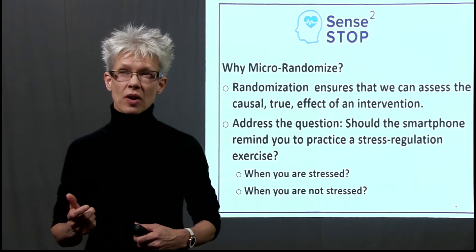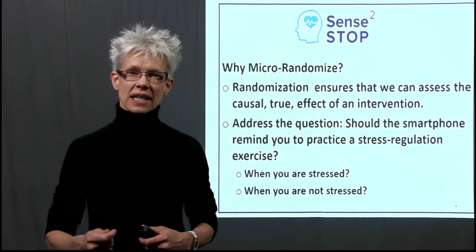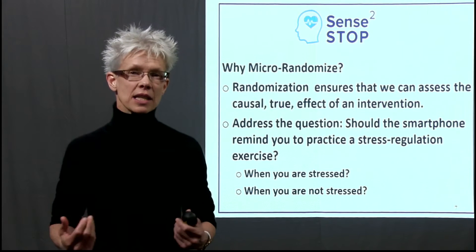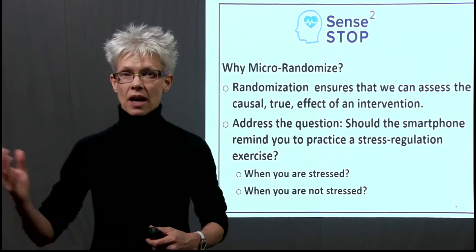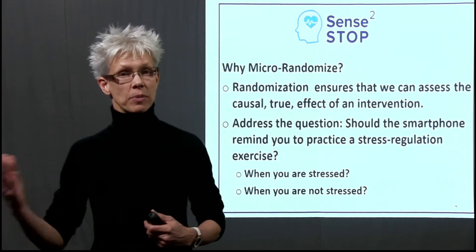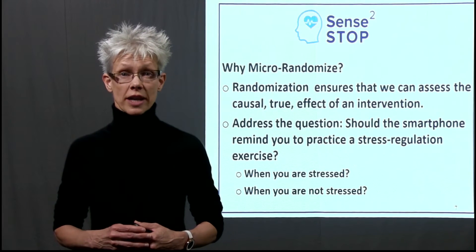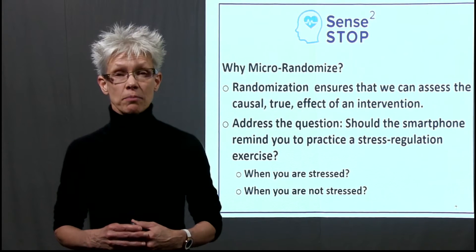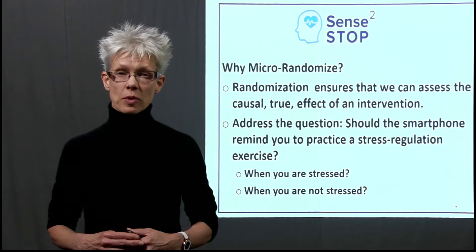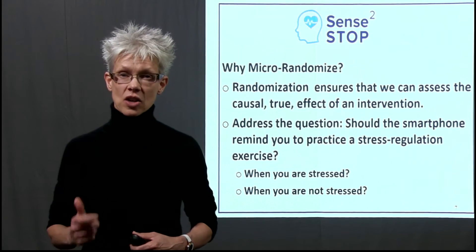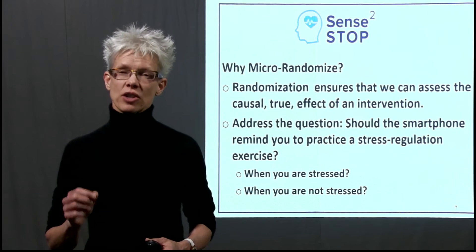Suppose, unbeknownst to us, the highly motivated people are the ones accessing the app, whereas the less motivated people don't. When we look at the effect of using the application on stress in the next hour, it might look really good — it looks like it really reduced stress. But it could be that motivated people just manage their stress better. The reason why we're randomizing is to assess the causal effect, so we won't end up sending people reminders that are not even useful for them.